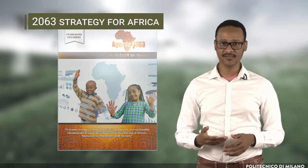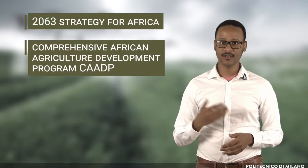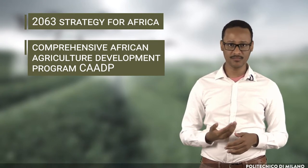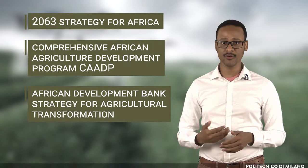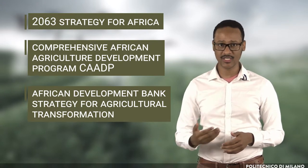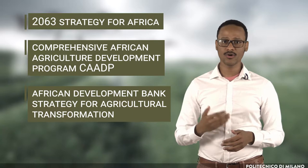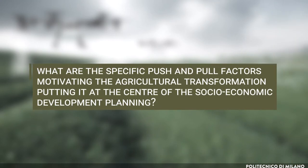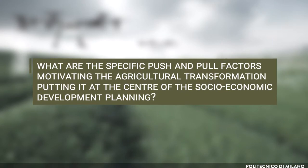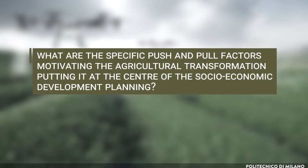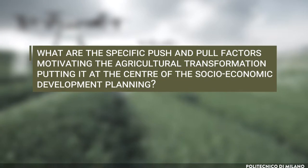The 2063 strategy for Africa, the Comprehensive African Agricultural Development Programme, and the African Development Bank Strategy for Agricultural Transformation are all aligned, consolidating the modernization of agriculture and agro-businesses. But what are the specific push and pull factors motivating agricultural transformation and putting it at the center of socio-economic development planning?